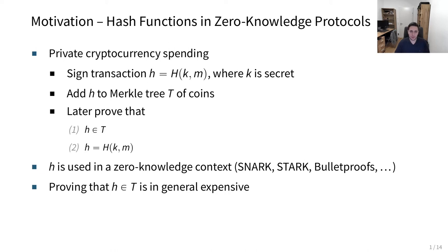The difference to a classical scenario here is that h is used in a zero-knowledge context, for example in SNARKs, STARKs, or in Bulletproofs. Proving that this relation holds, so that h is actually an element of the tree, is in general expensive.